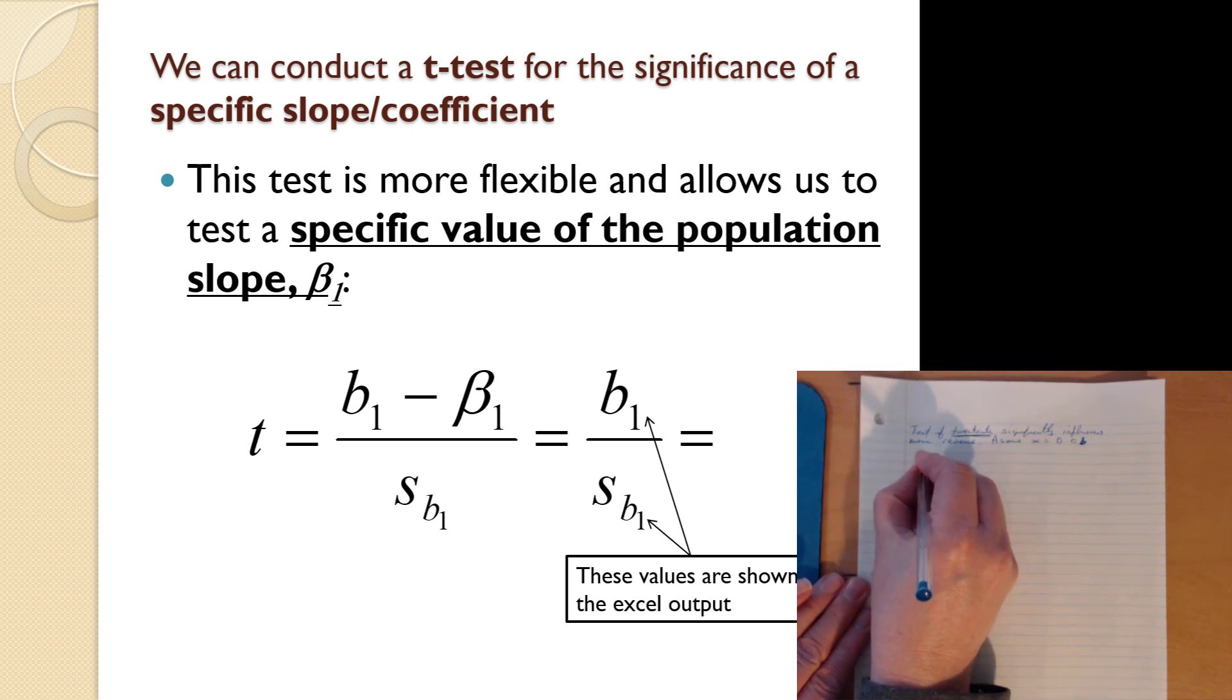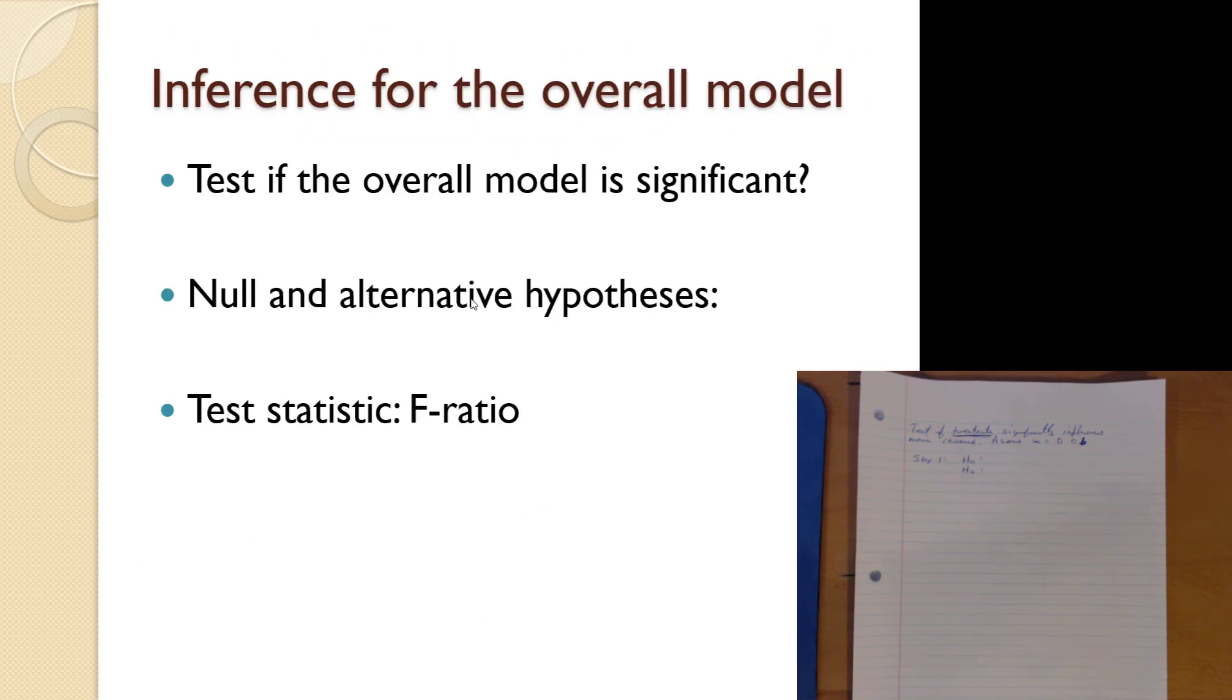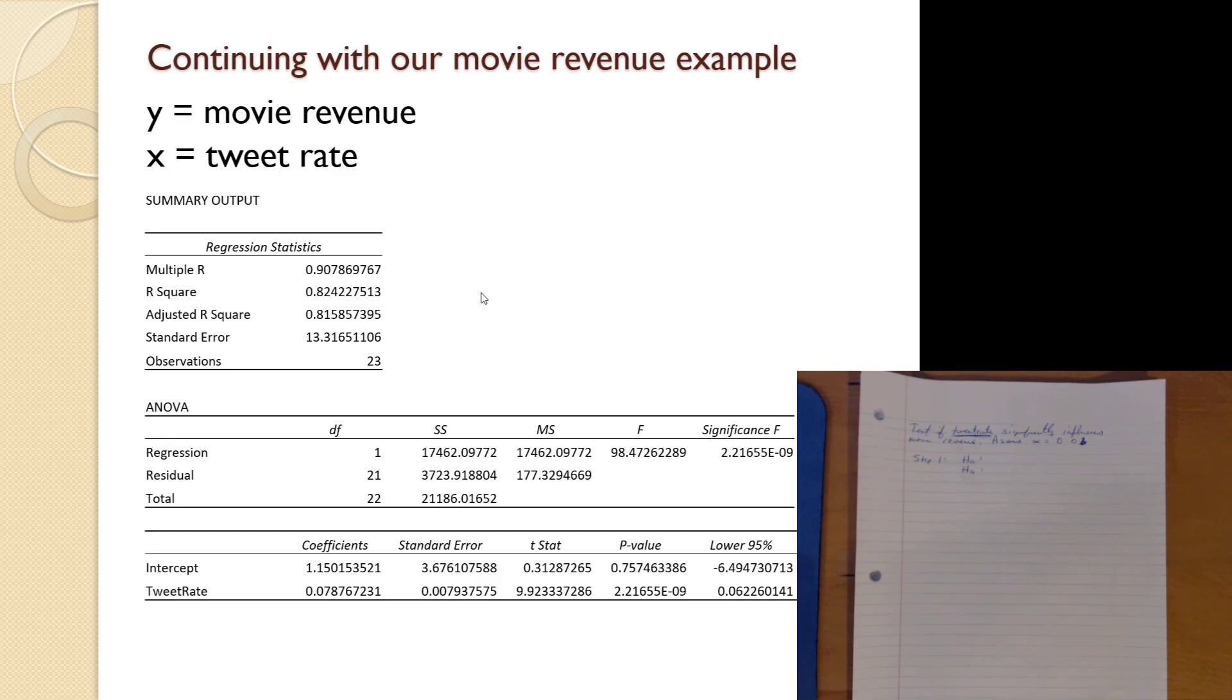In step one, we have an H0, we have an HA. Now we're gonna roll over and look at the output. We have tweet rate. Intercept will be beta zero. We know this from our experiences with the population model earlier. Tweet rate is the first slope so it'll be beta one.